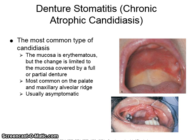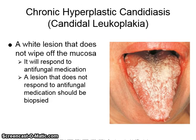Denture stomatitis, also known as chronic atrophic candidiasis, is the most common type of candidiasis. The mucosa is erythematous, but the change is limited to the mucosa covered by a full or partial denture. It is most common on the palate and maxillary alveolar ridge, and is usually asymptomatic. Chronic hyperplastic candidiasis, or candidal leukoplakia, is a white lesion that does not wipe off the mucosa and will respond to antifungal medication. A lesion that does not respond to antifungal medication should be biopsied.